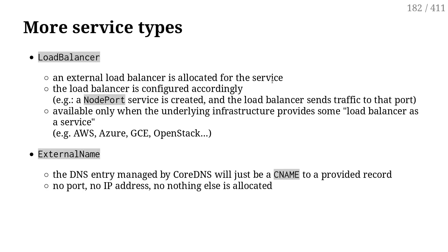We also have a couple of other service types that are not always available. First, there is LoadBalancer. The name can be a little bit of a misnomer, because at first I thought that if I can't create that type of service, then I can't load-balance at all — but that's not the case. Service type LoadBalancer means that there will be a cloud load balancer for that service. For instance, if I'm on Amazon, that's an ELB. If I'm on Azure, Google Cloud, or OpenStack, it's going to be the load-balancer-as-a-service equivalent on those clouds. So when I create a service of type LoadBalancer, a load balancer will be created and used to handle my traffic.